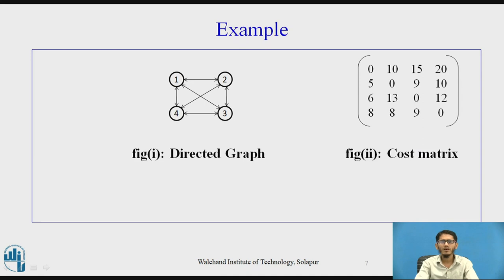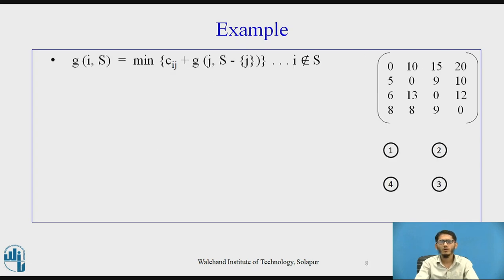Now here is the example. Figure 1 shows the directed graph and Figure 2 shows the cost matrix. The values in the cost matrix represent the cost or length of each edge. For example, the value 10 indicates that from vertex 1 to vertex 2 the cost is 10 units. To find the optimal tour we use the formula g(i, S) = minimum of [c_ij + g(j, S minus {j})], where i does not belong to S. We first consider |S| = 0, meaning S is an empty set.